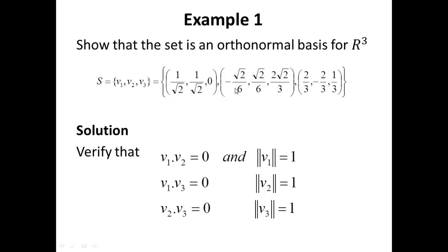So I take the dot product of V1 and V2 — that gives zero; the dot product of V1 and V3 gives zero; the dot product of V2 and V3 gives zero. Then I find the norm of V1, which is the square root of the first component squared plus the second component squared plus the third component squared, and that gives one. Similarly, the norm of V2 equals one and the norm of V3 equals one. We conclude that the set S is an orthonormal set, and it is also a basis for R3, and therefore it is an orthonormal basis for R3.